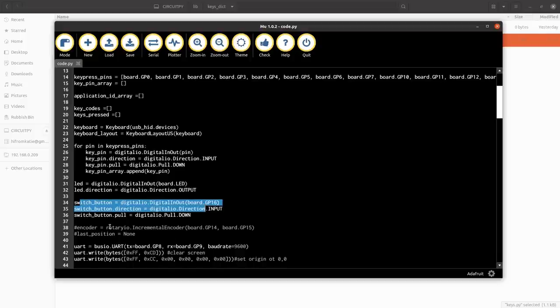And then switch button, so this is now what I'm using instead of the rotary encoder. I've left that in so we can put it back in when they release the next version of CircuitPython for the Pico. That will hopefully allow it.